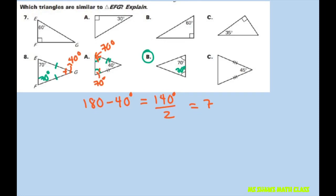And so this one has to be 40, and this one is off, so both of these triangles are similar.